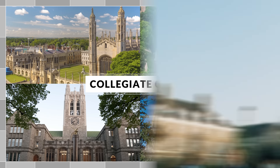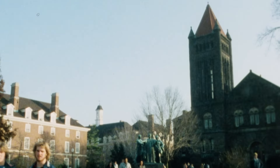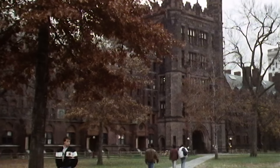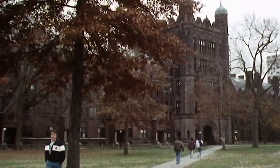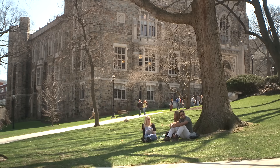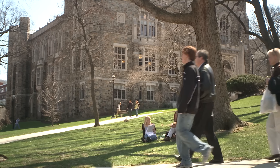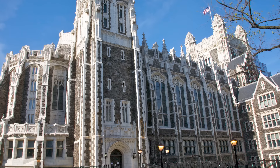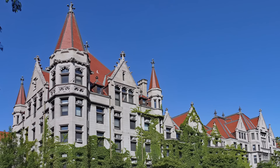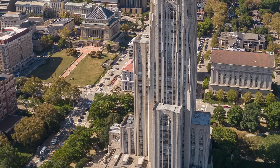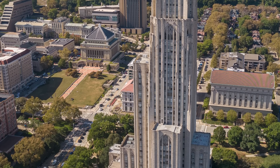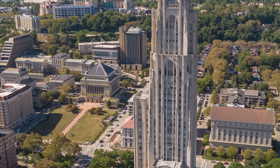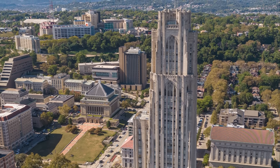Collegiate Gothic. This style is probably one of the most familiar to the over 170 million Americans who hold a college degree. There are countless examples from every decade built in this style, including Duke University Chapel, Washington University in St. Louis, City College in New York City, the University of Chicago, and the Cathedral of Learning at the University of Pittsburgh — which is actually the tallest educational building in the Western Hemisphere.